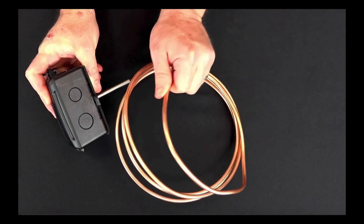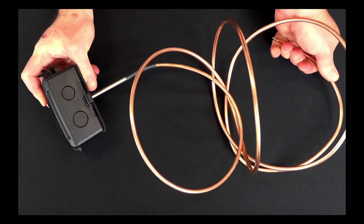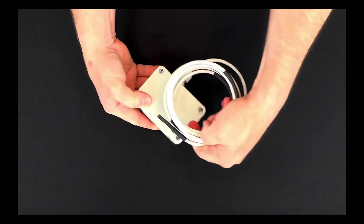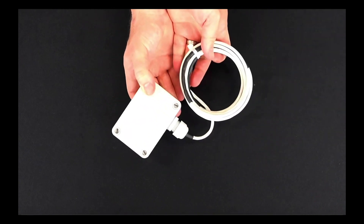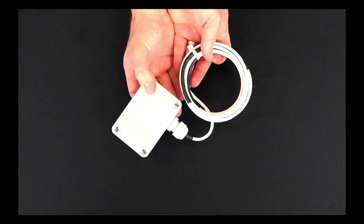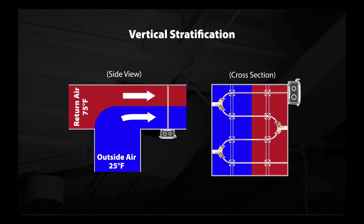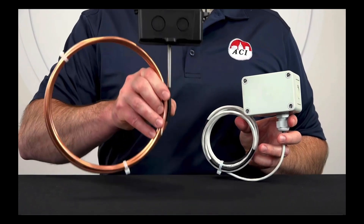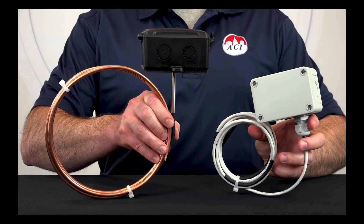Next let's take a look at both our copper and flexible averaging sensors. These sensors differ from rigid averaging because the sensing element is made of either copper tubing or a flexible cable that can be bent back and forth within the duct in order to get an accurate average temperature. Stratified air can be difficult to monitor within ductwork because the air is separated into layers with different temperatures. In these cases you will get more accurate readings using copper or flexible averaging sensors compared to a rigid probe averaging sensor.